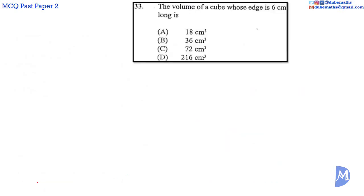Question 33. The volume of a cube is given by S cubed, where S is the length of each edge. The length of each edge in this cube is 6 centimeters long. So the volume is equal to 6 cubed, which is equal to 6 multiplied by 6 multiplied by 6.